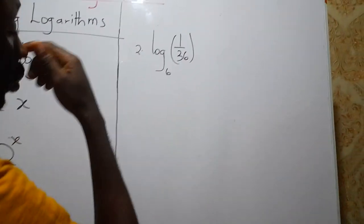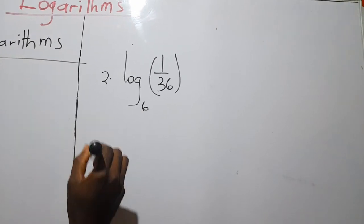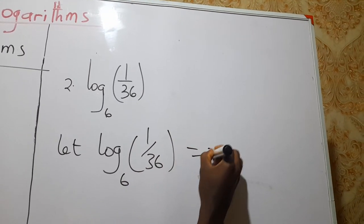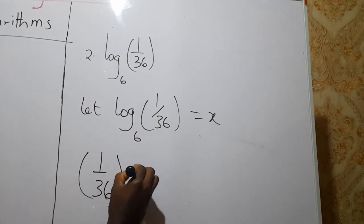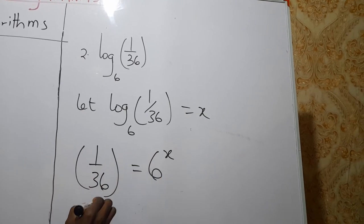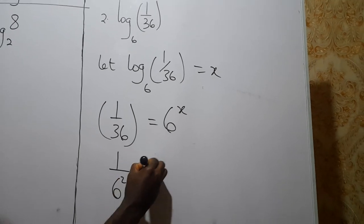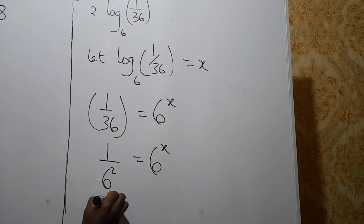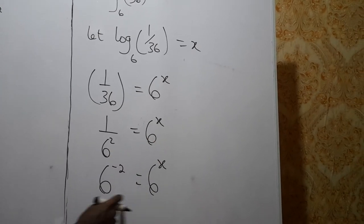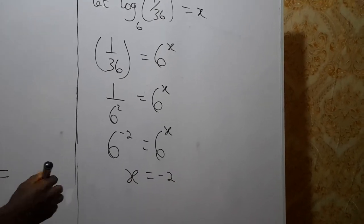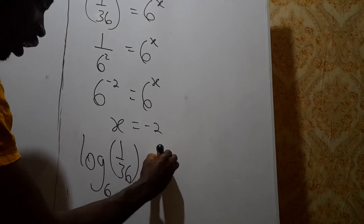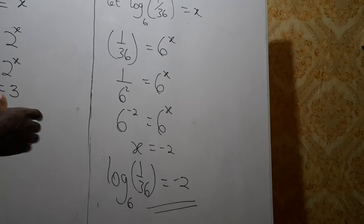Now let's evaluate log(1/36) base 6. Let log(1/36) base 6 equal x, so 1/36 equals 6 exponent x. Since 36 equals 6 exponent 2, we have 1/36 equals 6 exponent negative 2. So 6 exponent negative 2 equals 6 exponent x, and since the bases are the same, x equals negative 2. Therefore log(1/36) base 6 equals negative 2.